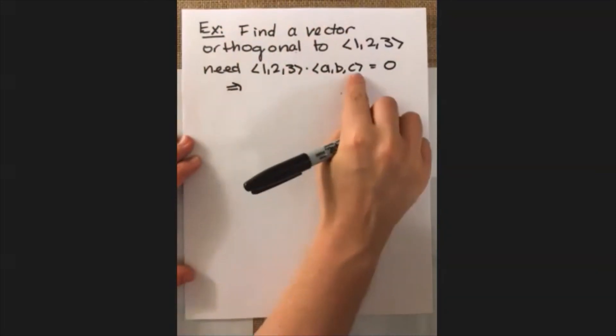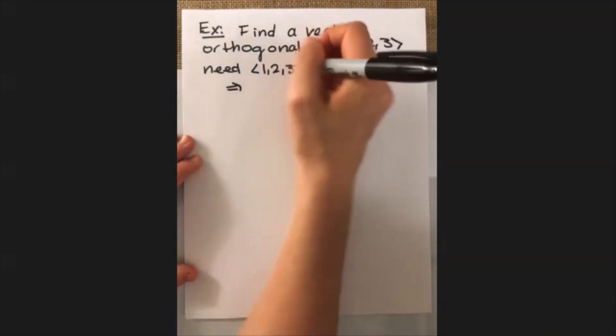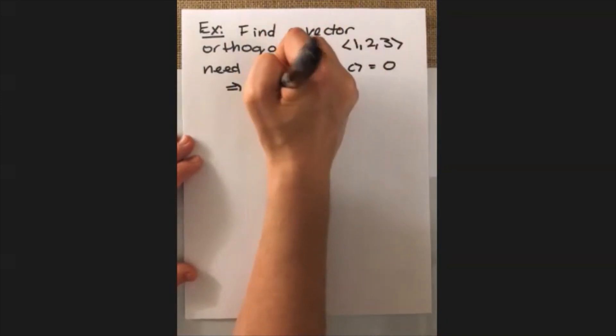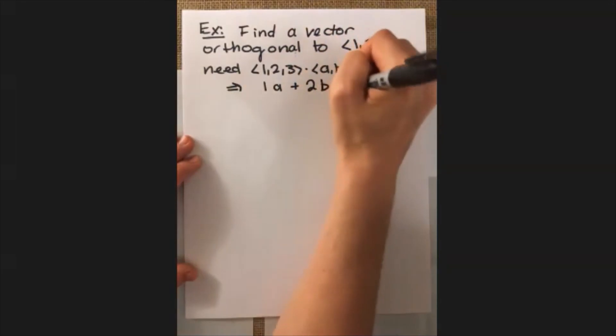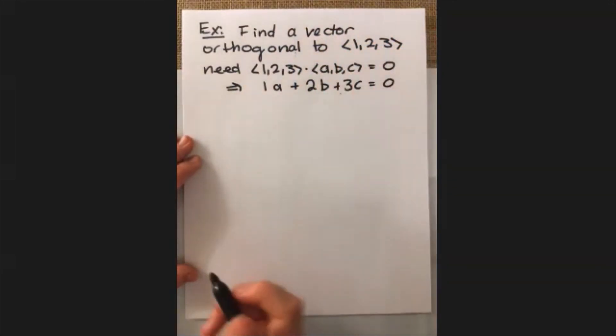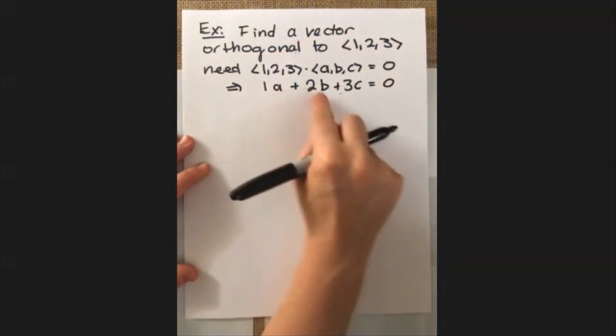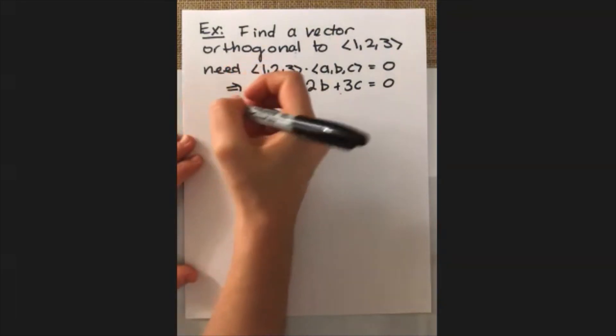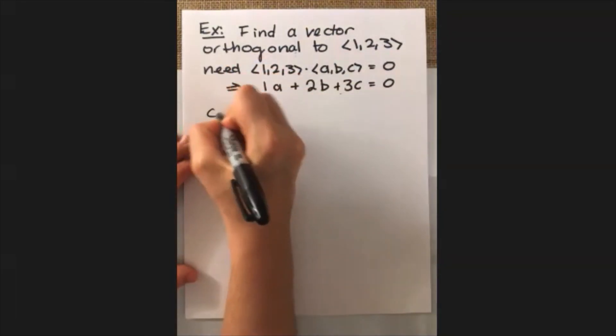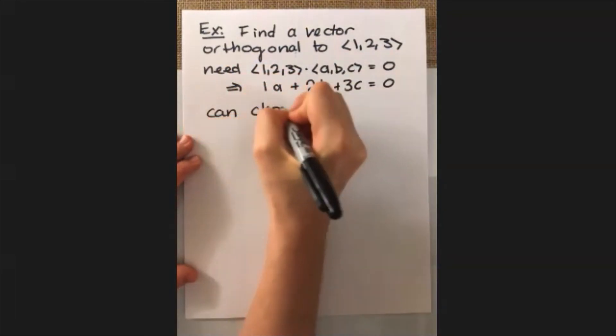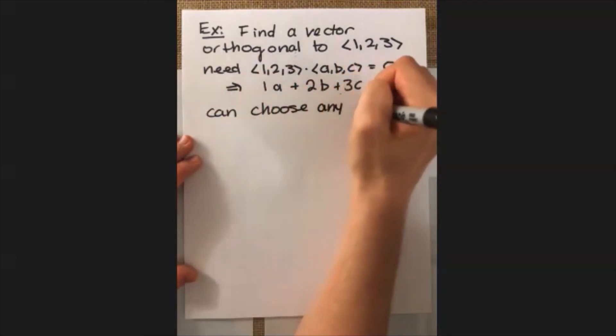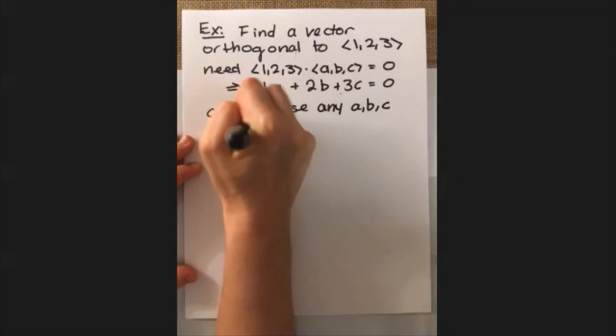If we rearrange this side a little bit to kind of write out that expression for the dot product, what this means is we need 1 times a plus 2 times b plus 3 times c to be equal to zero. And we can fill in really any numbers that we want here because, again, it can be any vector that we want. So we can choose any a, b, and c making this statement true.